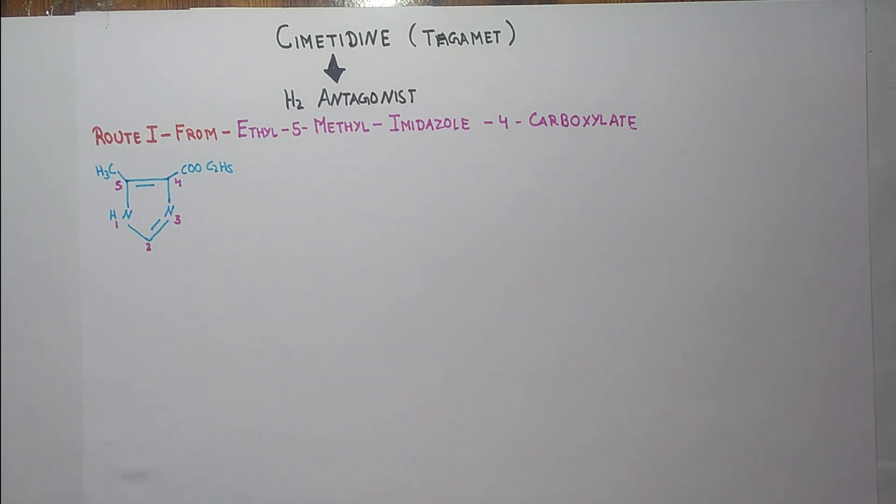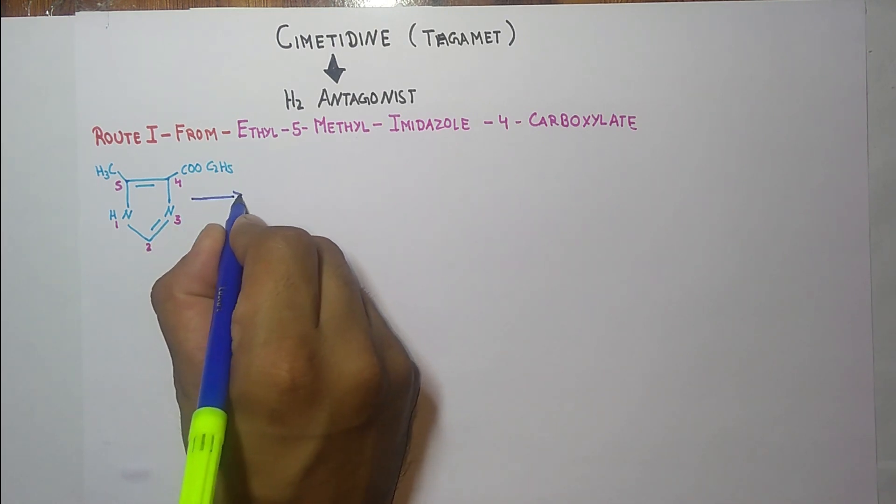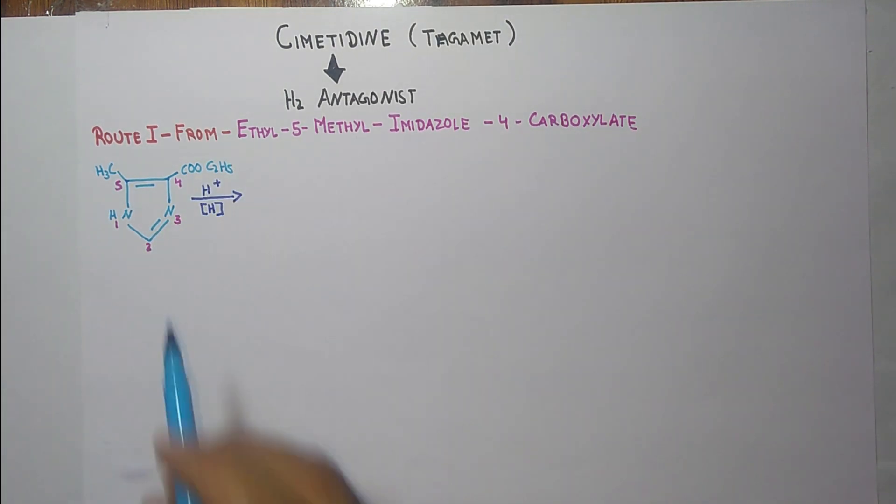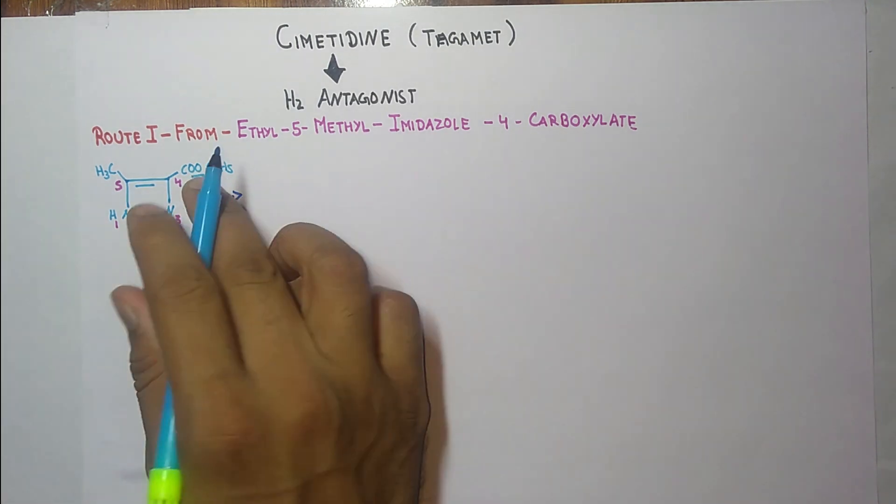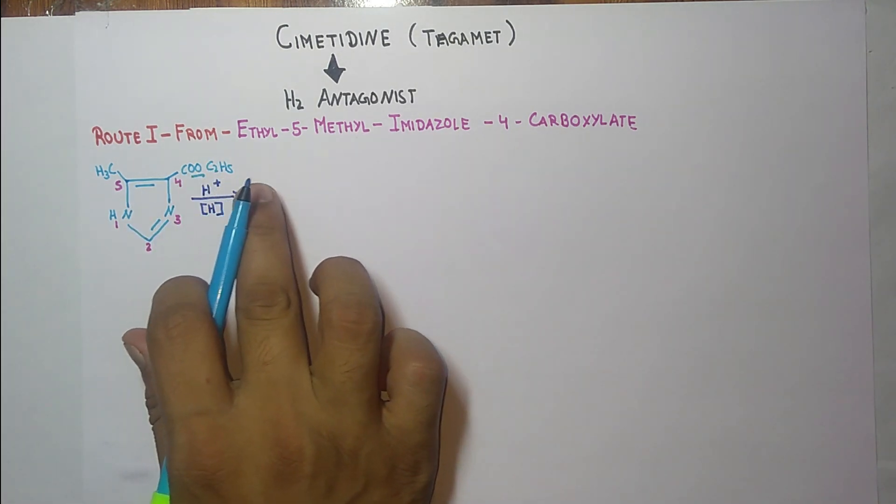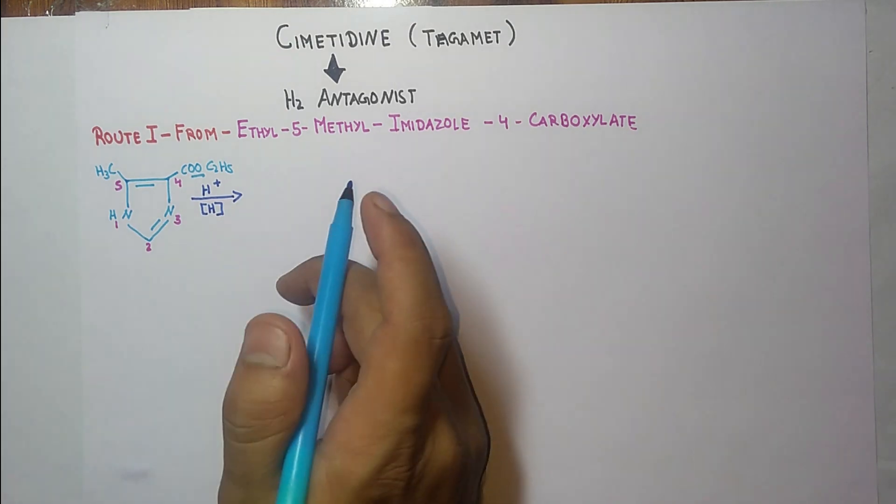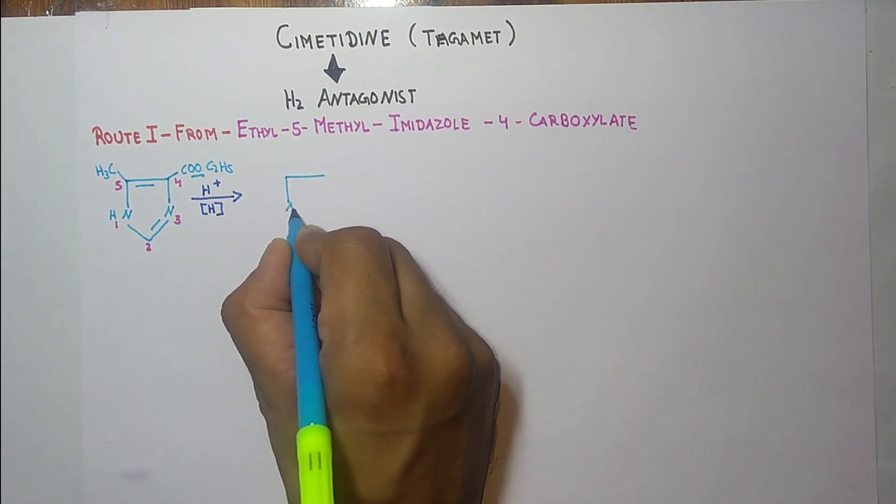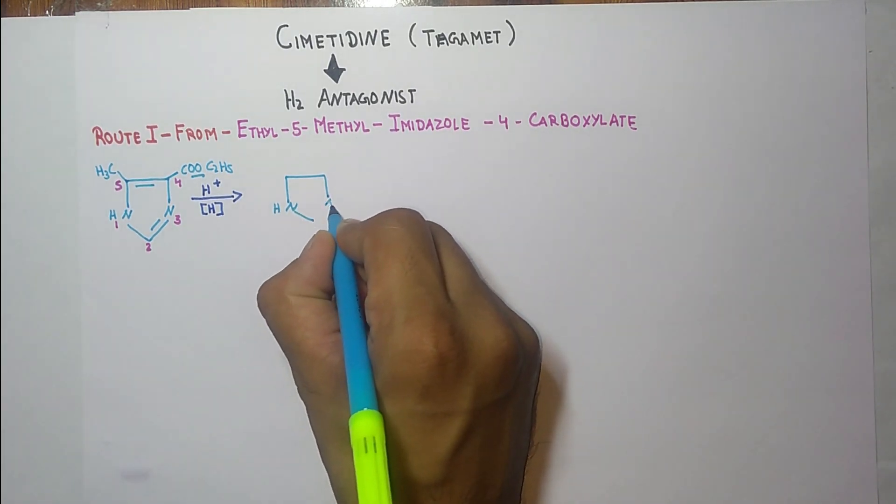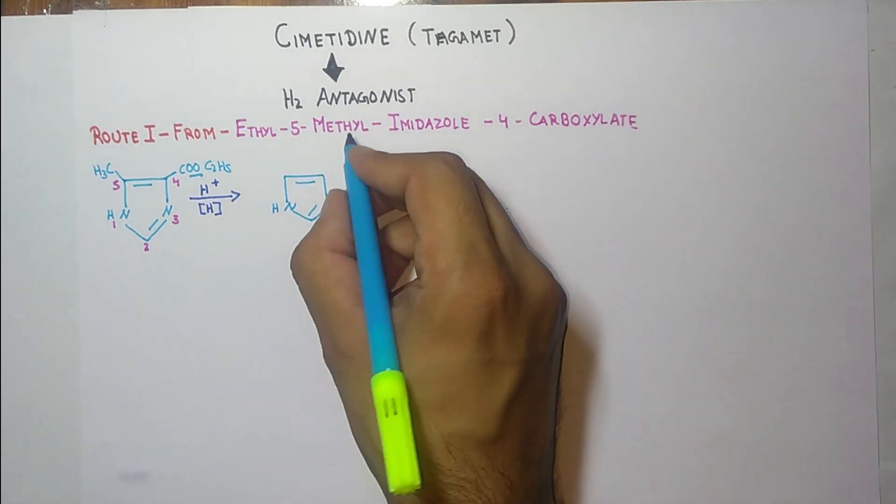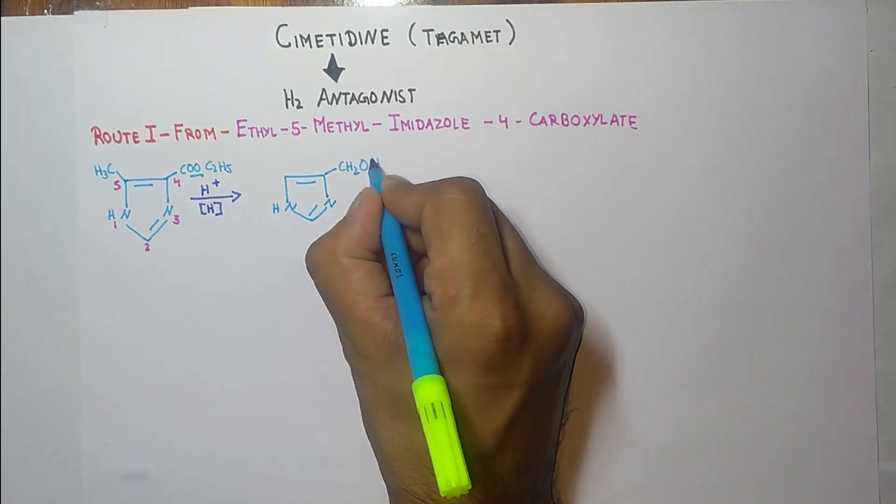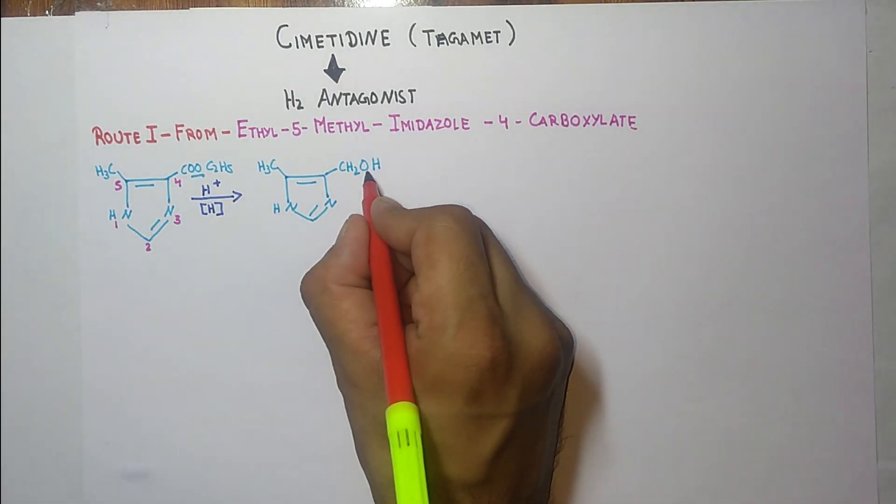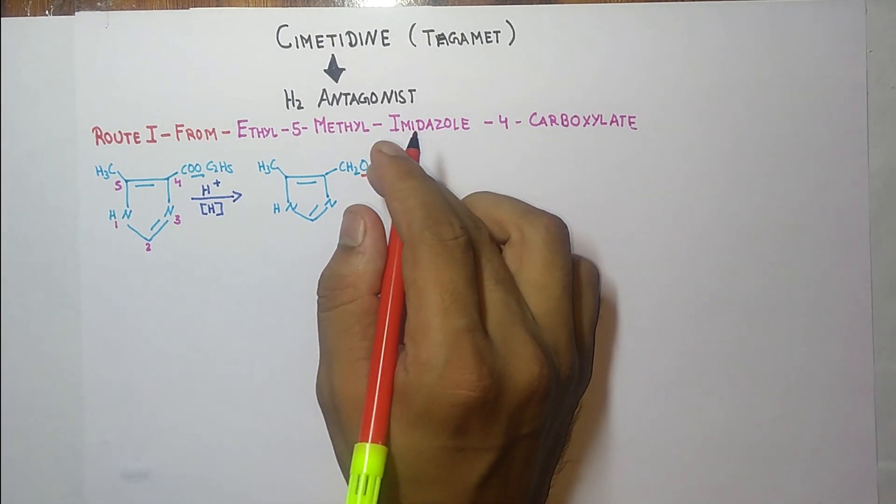So with the help of H plus ion and hydrogen there will be a removal of this group and instead of this group there will be a group present in next structure that is alcohol. So here the alcohol group came here.